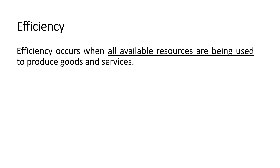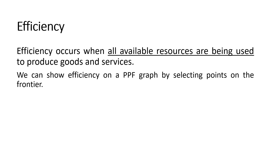First let's define efficiency. In simple terms, efficiency occurs when all available resources are being used to produce goods and services. We can show efficiency on a PPF graph by selecting points on the frontier.